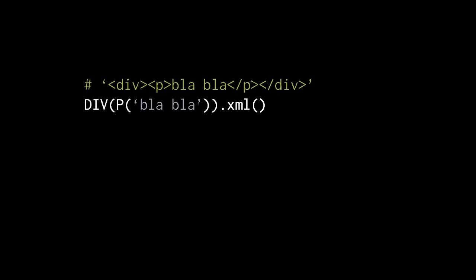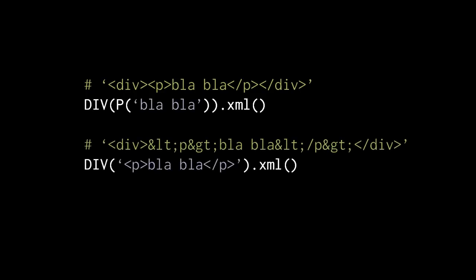To be clear, the strings we pass to these helper object constructors are always treated as text content that needs to be XML escaped. So when we pass to div a string that looks like it contains a P-tag, that's not parsed into a P-tag — it's just treated as text content. When we invoke the XML method on this div object, the string we get back has a bunch of character entities where the angle brackets were.